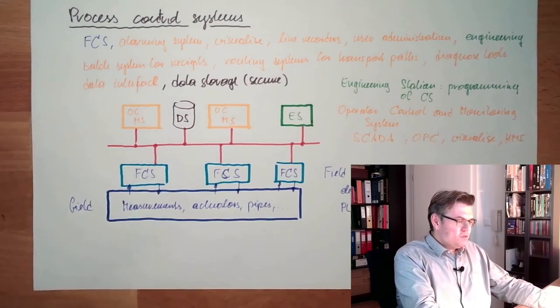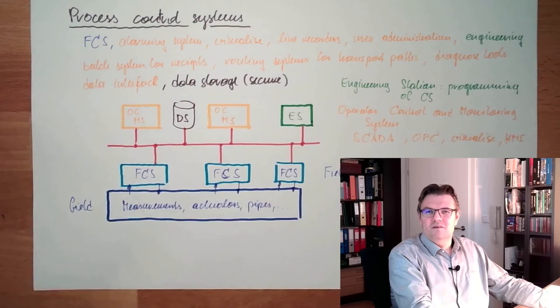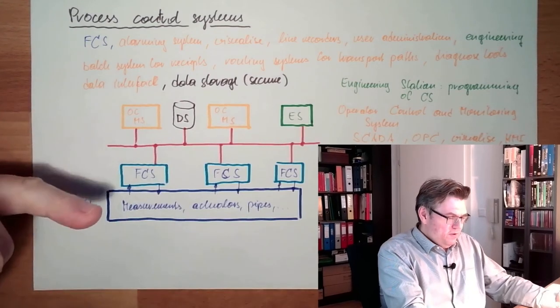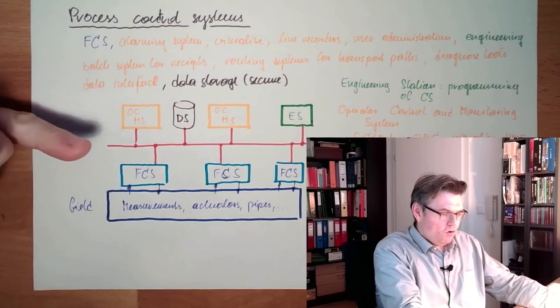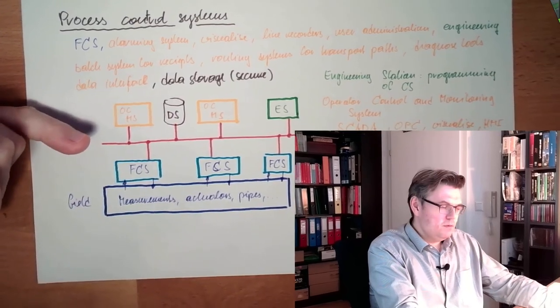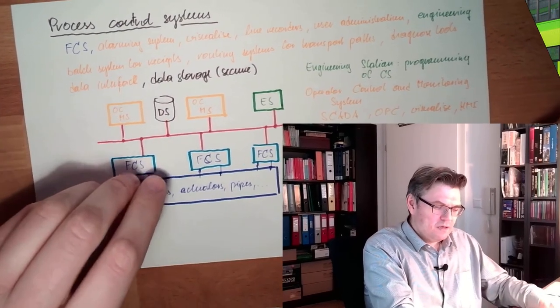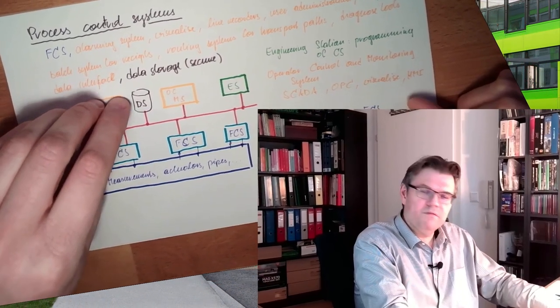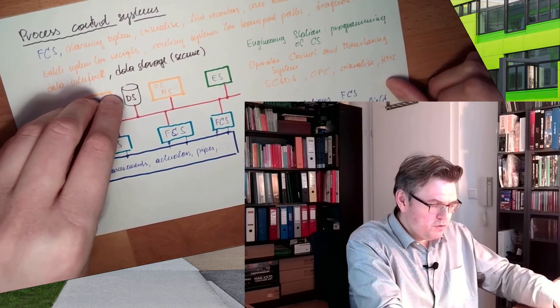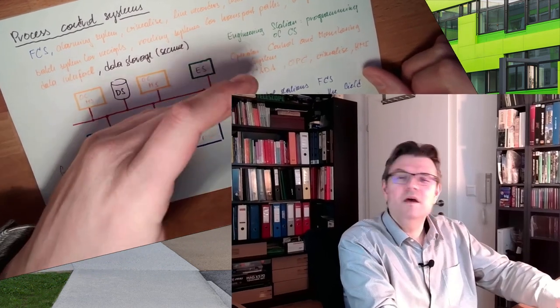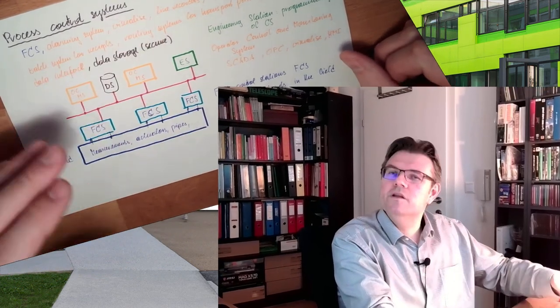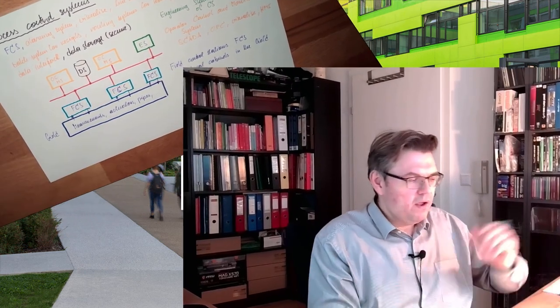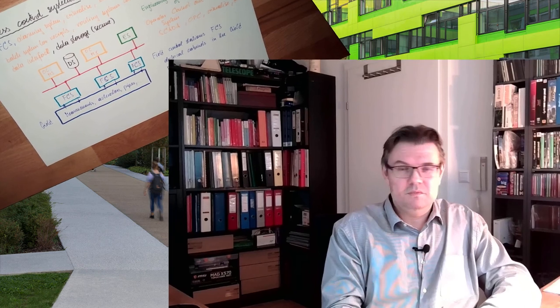These are the parts a process control system consists of. Field control stations, operating control and monitoring systems, PLCs, maybe remote I/Os. There's a SCADA system, visualization, data storage, and usually some engineering station where I can influence the software or change my process control system.